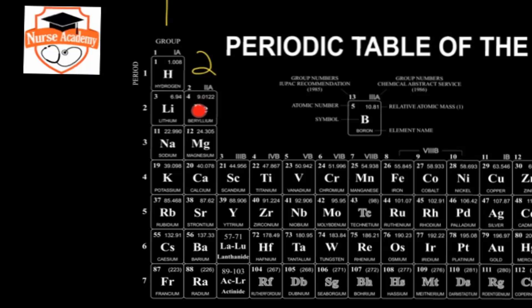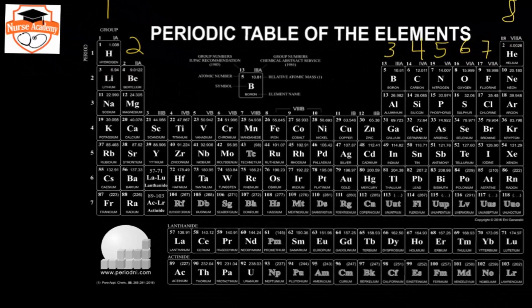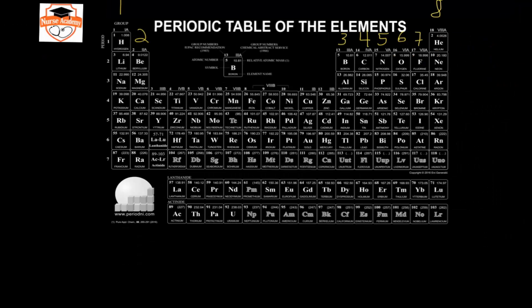For example, a beryllium atom has two valence electrons. To get a full valence shell, it would have to empty those two spots or add six more electrons to fill the energy level. It is easier to remove two electrons than to add six, so beryllium will empty those two spots, leaving the previous principal energy level filled, and form a plus-two charge.